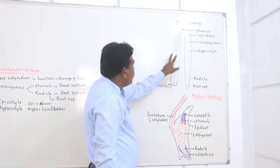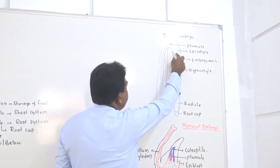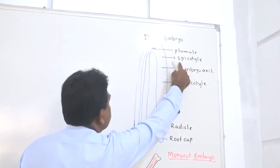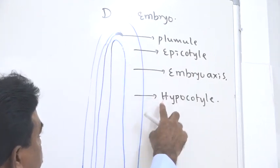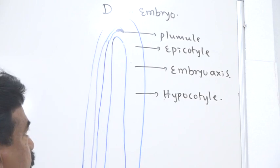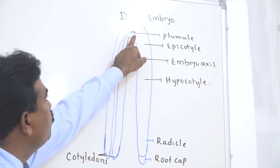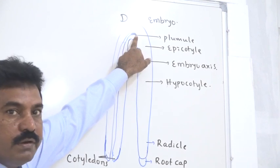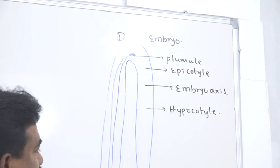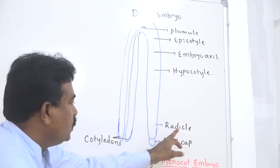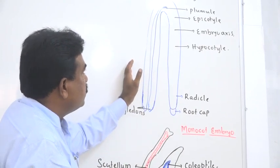In the dicot embryo there are two cotyledons, and it has the embryo axis. Above the embryo axis whatever structure is present is called epicotyl; below it is hypocotyl. The embryo axis gives the plumule, which develops into the shoot system, and the descending axis radicle, which develops into the root system, protected by the root cap.